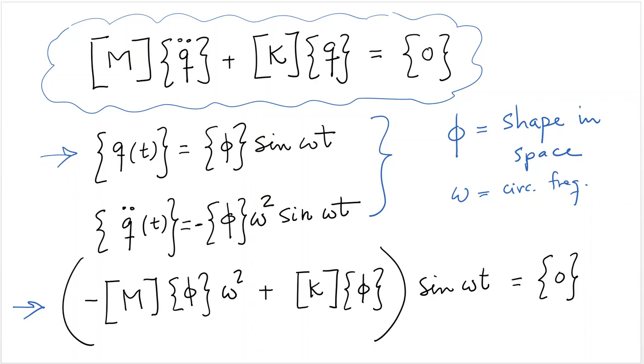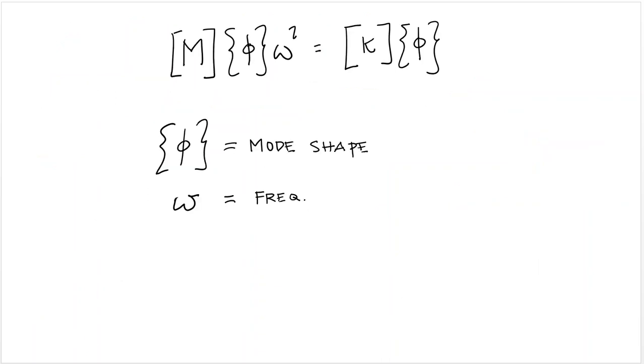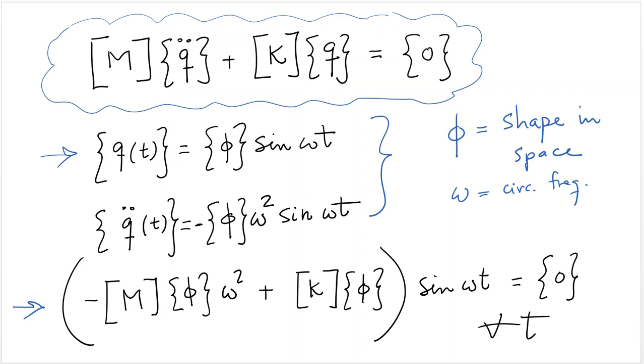Minus M phi omega squared plus K phi, all of that multiplied by sine omega t equals zero. Now, this has to be true for all times. Since sine of omega t is not zero for all times, in order for this solution to be true, the following equation needs to be true, and this is the key equation for modal analysis of undamped systems: M phi omega squared equals K phi. So, whatever that shape is that we picked and that frequency, they have to satisfy this equation right here. So, if we can show that this equation can be satisfied and it's true, then the solution for the displacement of the structure in free vibration could have this shape right here, which is basically a shape in space which is independent of the vibration in time.